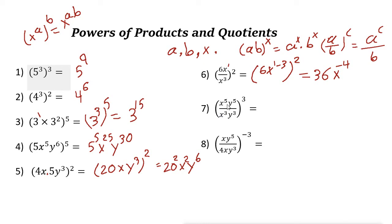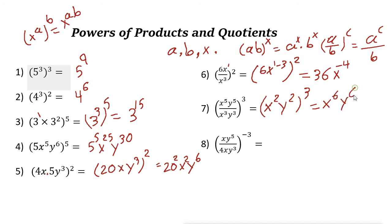Next example: (x^5 · y^5 / x^3 · y^3)^3. Cancel values inside: x^5 divided by x^3 is x^(5−3) = x^2, and y^5 divided by y^3 is y^(5−3) = y^2. So inside we have (x^2 · y^2)^3. Applying the power of a product rule: 2 times 3 is 6, giving x^6 · y^6.